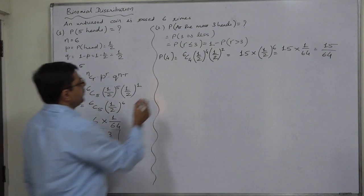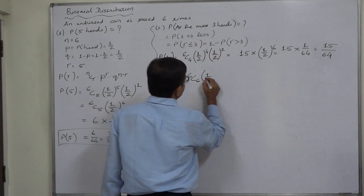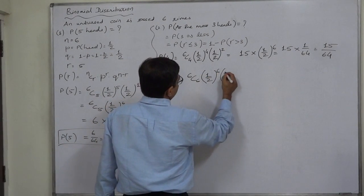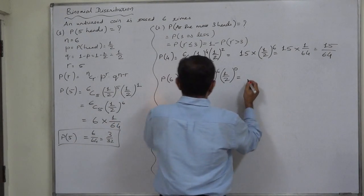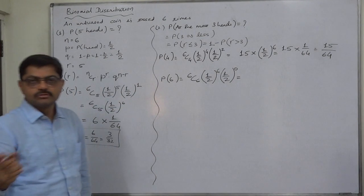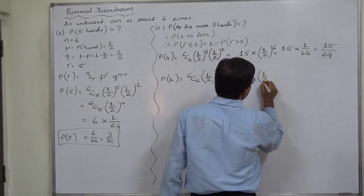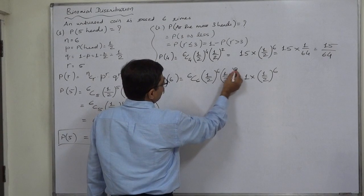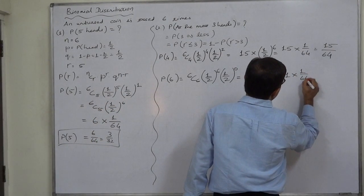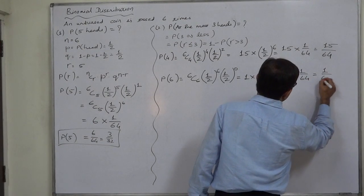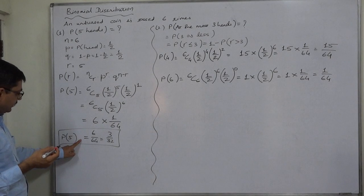Now, P of all six heads. P of six is 6C6 into one by two raised to six into one by two raised to six minus six, zero. So 6C6 is equivalent to 6C0, that is one. One into one by two raised to six—because the base is the same, we have to add the powers—that is one into one by sixty-four, which is one by sixty-four. And P of five we have already calculated in the previous case, we will be getting it directly from here.